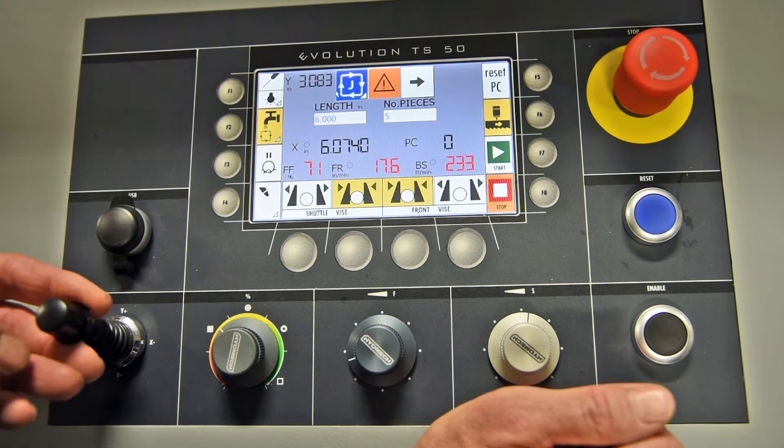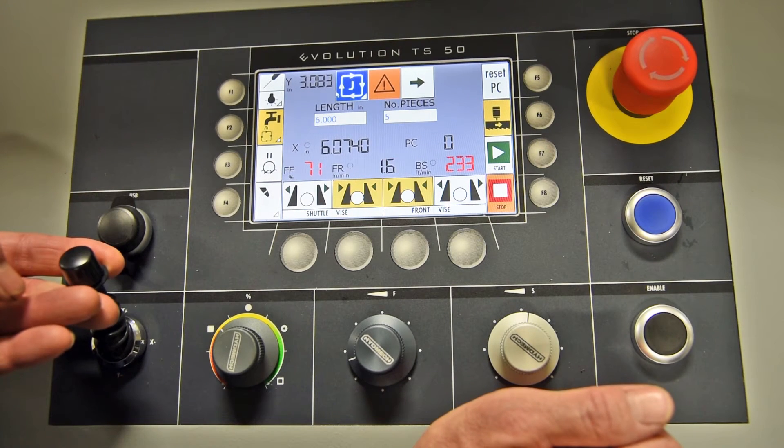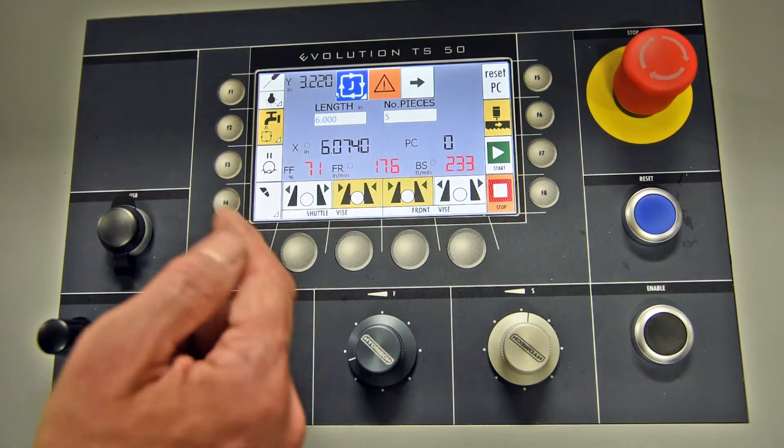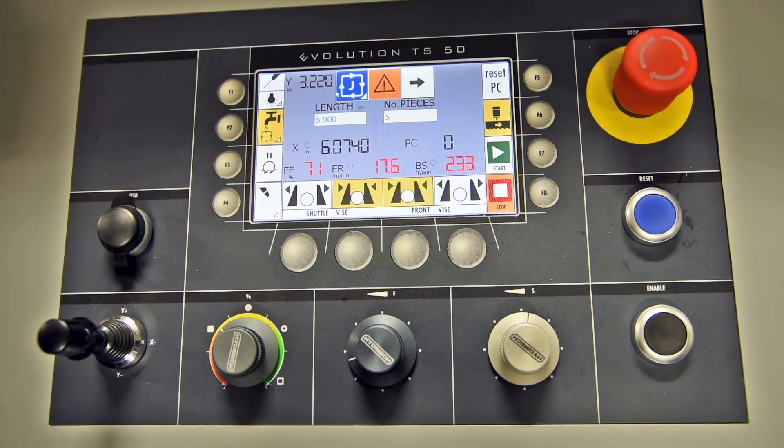So then what we can do, we are at 3, so we will take it up a touch. We are now set at 3.220, which gives us about 220,000 clearance from the top of our material. That is all that you would have to do to set your head.